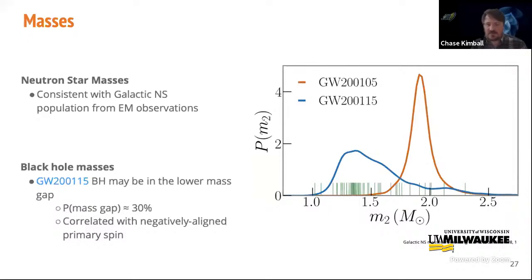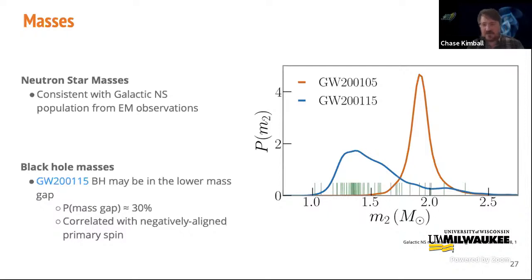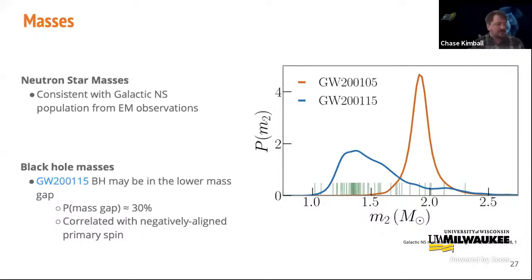Observations suggest that the galactic neutron star population peaks at around 1.3 solar masses with a secondary peak at around 1.9 solar masses. With secondary masses of 1.9 and 1.5 solar masses, the neutron stars in events 105 and 115 respectively are consistent with this population. With primary masses less than 10 solar masses, the black holes in these events are consistent with predictions of NSBH formation channels like the isolated channel or formation via young star clusters, though we find non-negligible support for the black hole in 115 lying in the lower mass gap between 3 and 5 solar masses—a gap inferred from electromagnetic observations of X-ray binaries that have yet to uncover black holes in this mass range.